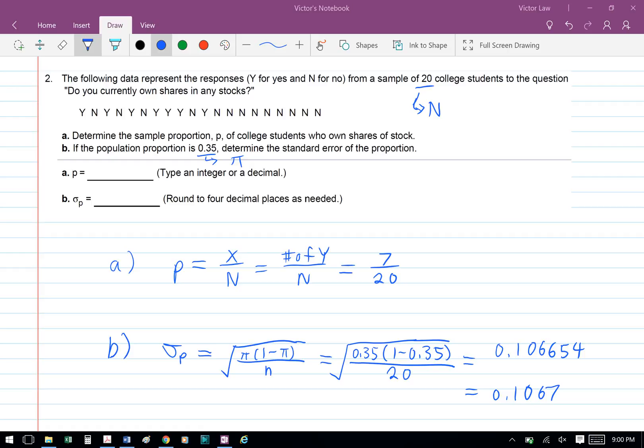The population proportion is denoted by pi, and we're going to find the standard error of the proportion using the formula square root of pi times (1 minus pi) over n. So pi is 0.35, and n is 20.